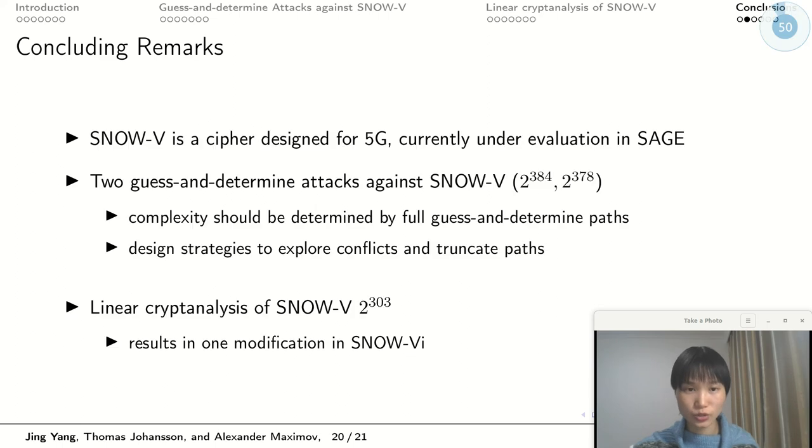Finally, I would like to give a conclusion. SNOW-V is a cipher designed for 5G and is currently under evaluation in the SAGE group. In our paper, we proposed two guess-and-determine attacks against SNOW-V with complexity 2 to the power of 384 and 2 to the power of 378. We pointed out that the complexity of the guess-and-determine attacks should be determined by the number of full guess-and-determine paths. Based on this, we designed guess-and-determine strategies to explore conflicts and truncate some guess-and-determine paths. Our linear cryptanalysis results in a distinguishing attack of a variant of SNOW-V with complexity 2 to the power of 303. This attack results in one modification in SNOW-Vi.